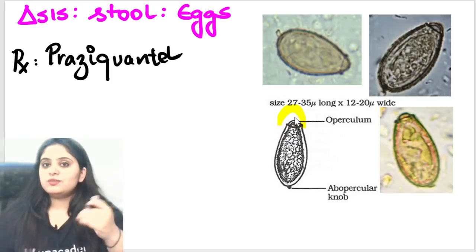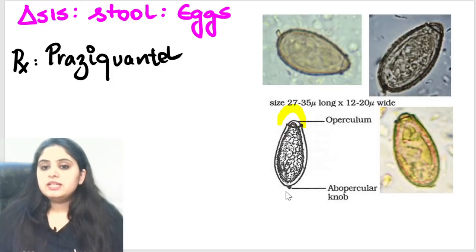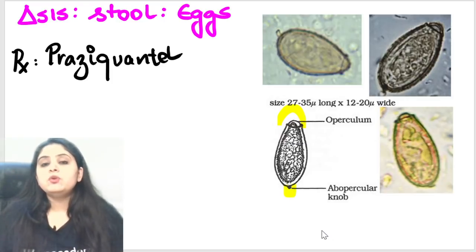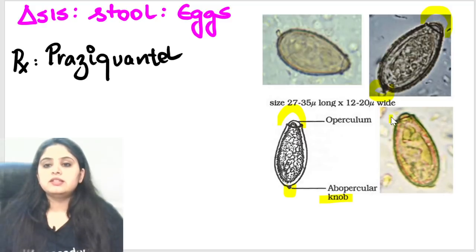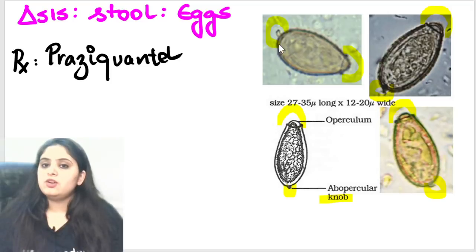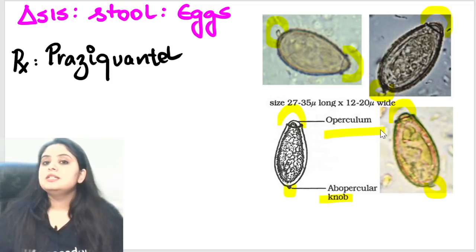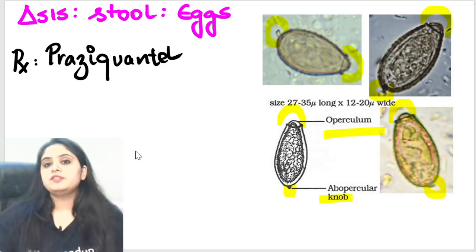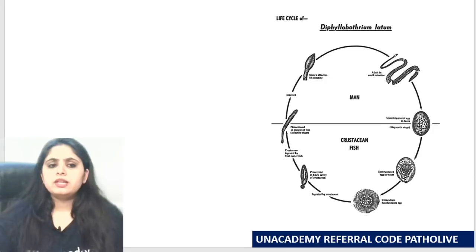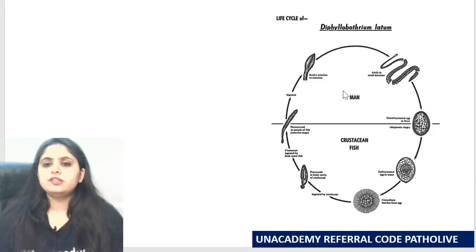The egg of D. latum has an operculum (lid) on one end and an abopercular knob on the other end. Remember: lid on one side, knob on the other. These are the operculated eggs of D. latum. The treatment is with praziquantel. Another visual clue in MCQs is the drawing of the adult worm showing two grooves — that's a strong hint for Diphyllobothrium latum.